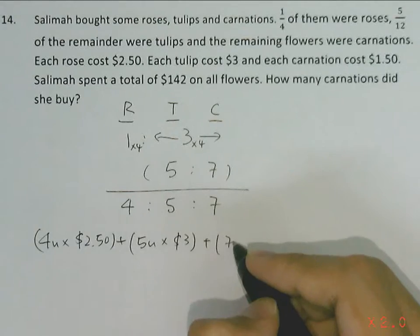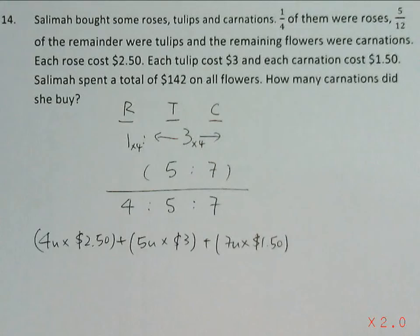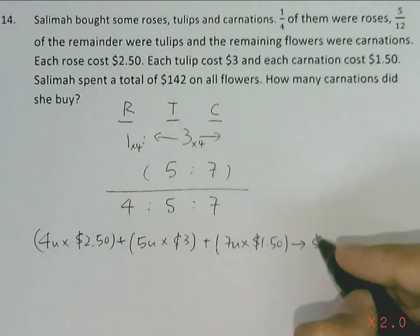And for the carnations, she bought 7 units, and each carnation cost her $1.50. So all these will add up to a total of $142.